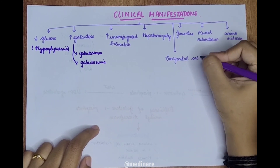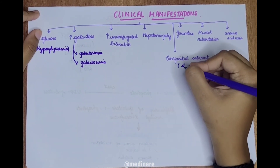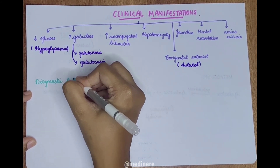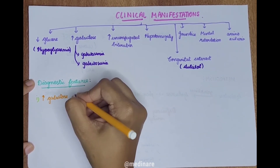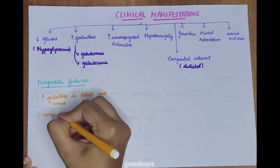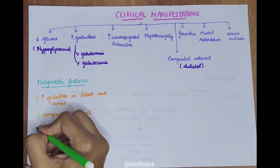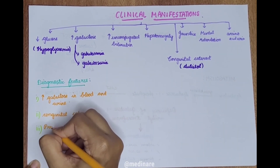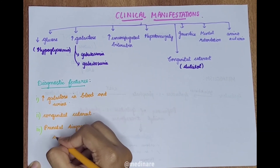Galactosemia also leads to congenital cataract due to the deposition of the reduced form of galactose, which is called dulcitol. We can diagnose cataract with the help of elevated galactose levels in urine as well as in the blood, and we can also detect galactosemia with the help of congenital cataract in children. Collection of fetal cells by amniocentesis is also useful in prenatal diagnosis of galactosemia.